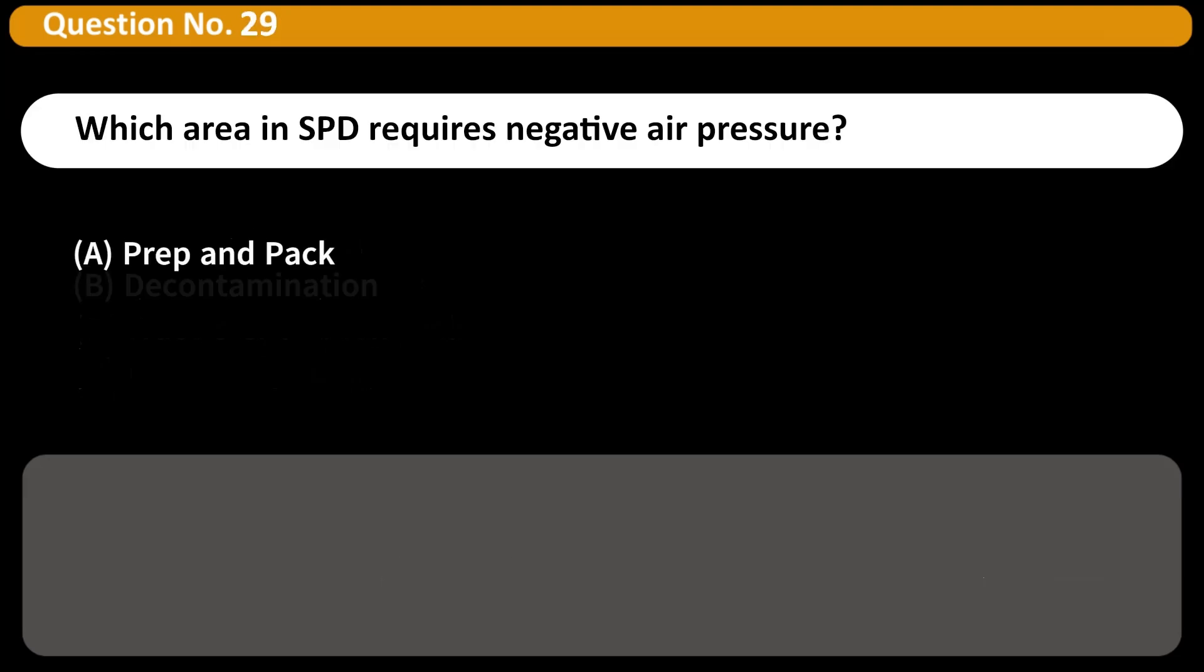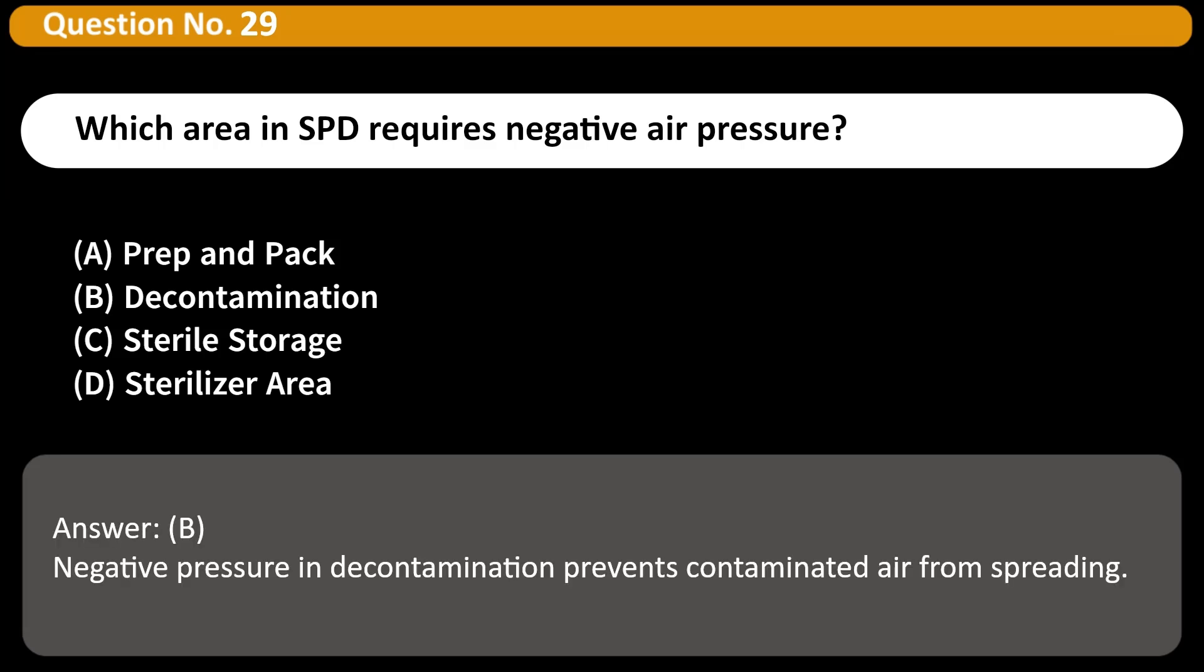Which area in SPD requires negative air pressure? A. Prep and pack, B. Decontamination, C. Sterile storage, D. Sterilizer area. Answer B. Negative pressure in decontamination prevents contaminated air from spreading.